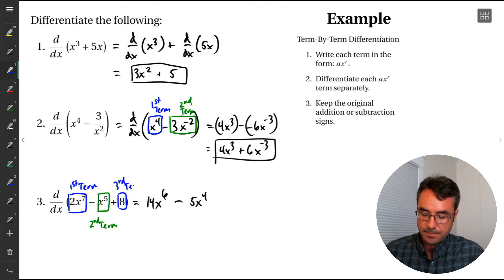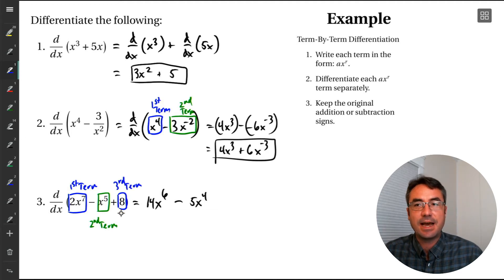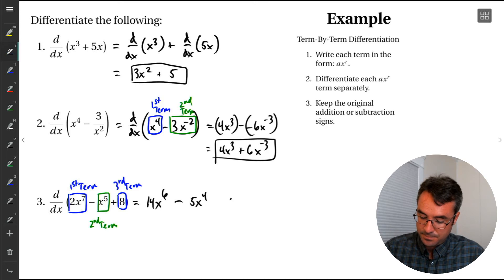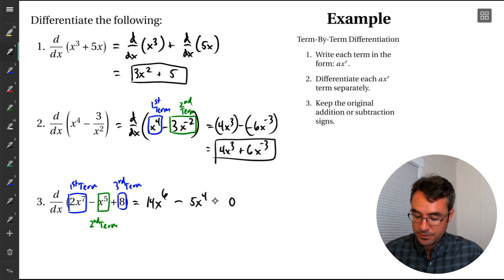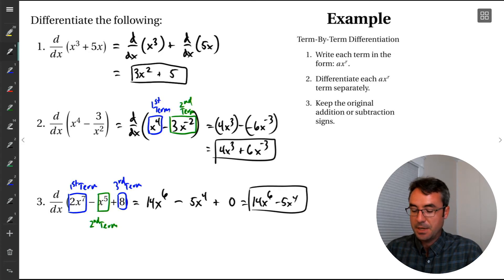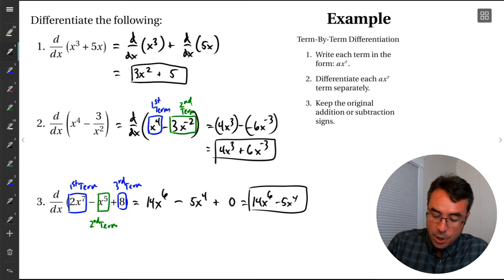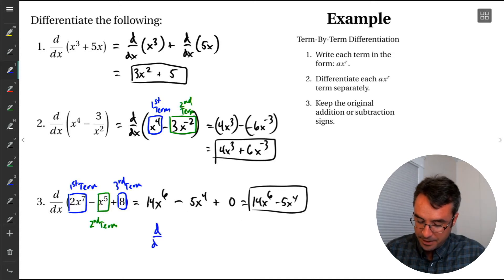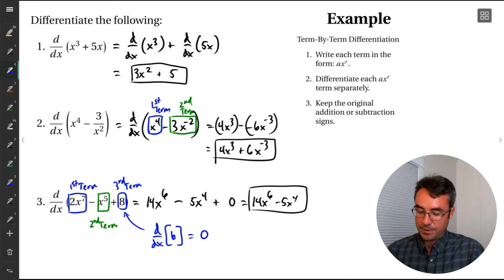Then we just keep going for however many terms we have. The third term is just a constant — the number 8 — getting added on by itself with no x's. The derivative of a constant is 0. There was addition in between, so we'd add plus 0, but we don't normally show this. So our final derivative is just 14x to the 6 minus 5x to the 4.